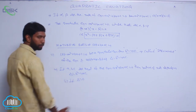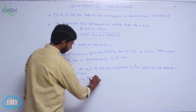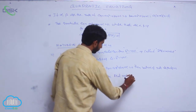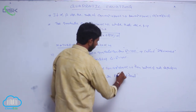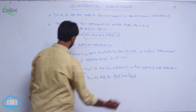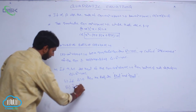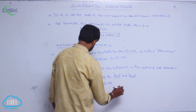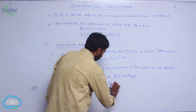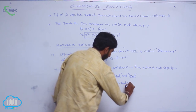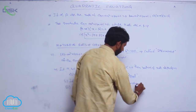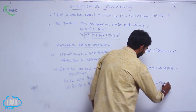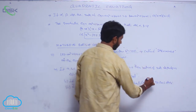If delta = 0, then the roots are real and equal. If delta is less than 0, then the roots are non-real complex and conjugate to each other.